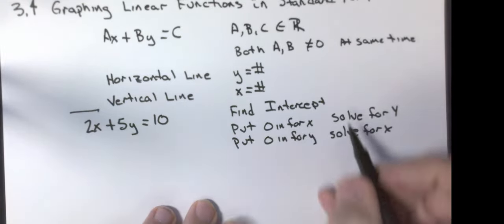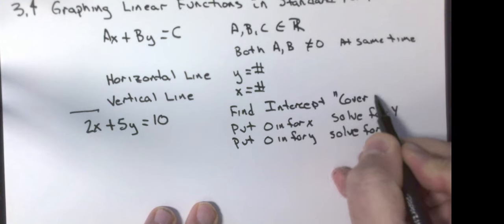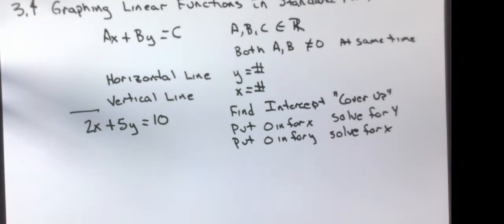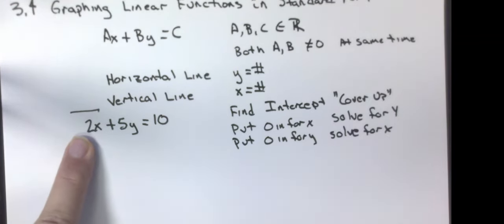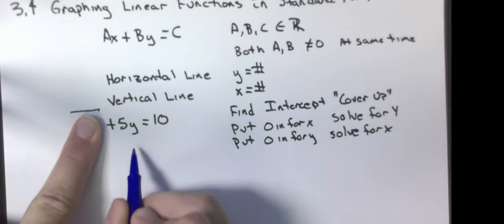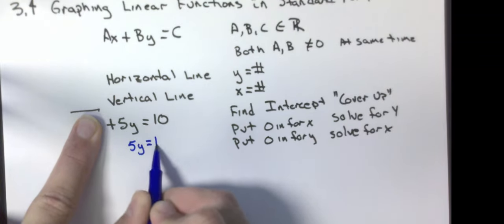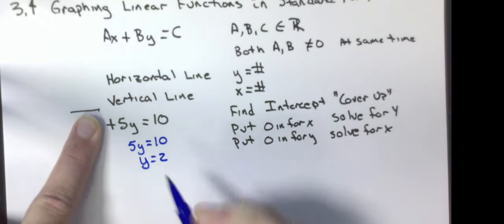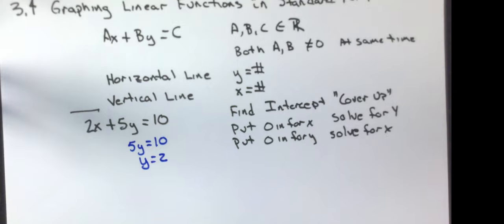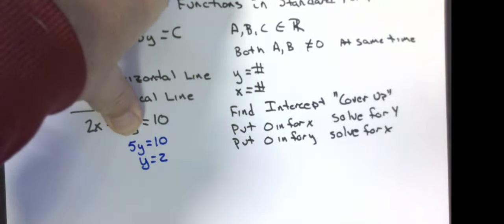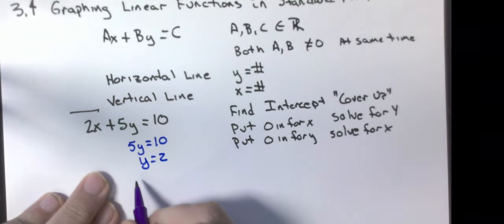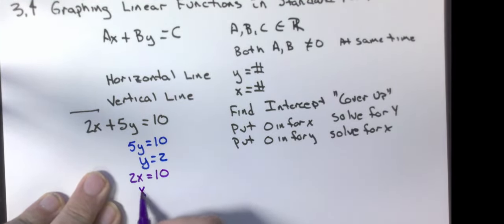I call this the cover-up method because what I'm going to do is I'm going to cover up one term at a time, and I'm going to solve that equation. So if I cover up my X term, because if I put a zero in for X, I get 5Y equals 10. Divide both sides by 5, and I get Y is 2. Then I'm going to cover up the Y term, and I get 2X equals 10. So X equals 5.